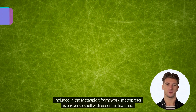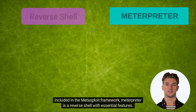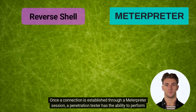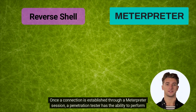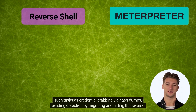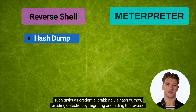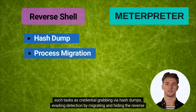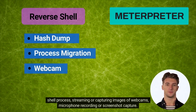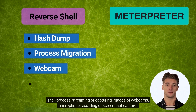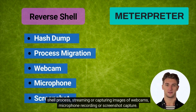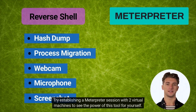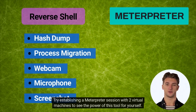Included in the Metasploit framework, Meterpreter is a reverse shell with essential features. Once a connection is established through a Meterpreter session, a penetration tester has the ability to perform such tasks as credential-grabbing via hash dumps, evading detection by migrating and hiding the reverse shell process, streaming or capturing images of webcams, microphone recording, or screenshot capture. Try establishing a Meterpreter session with two virtual machines to see the power of this tool for yourself.